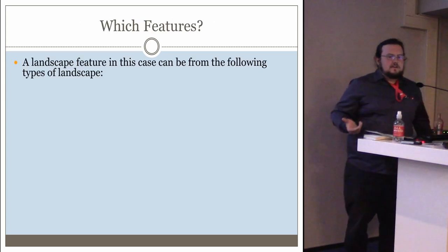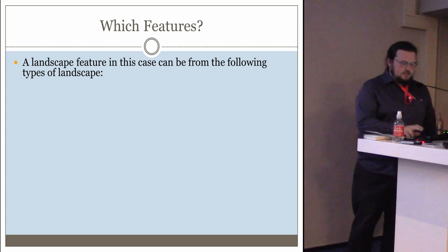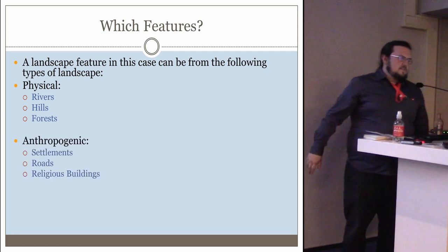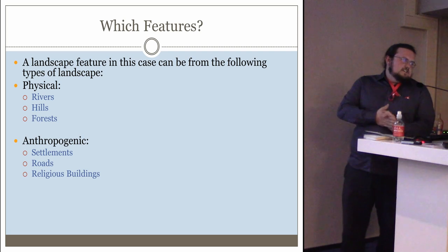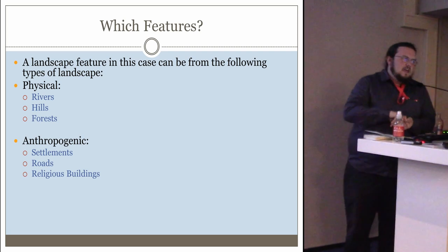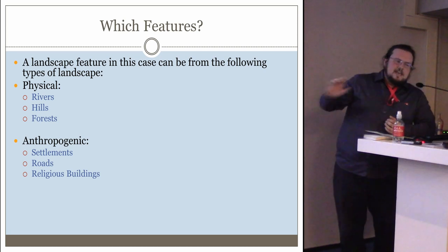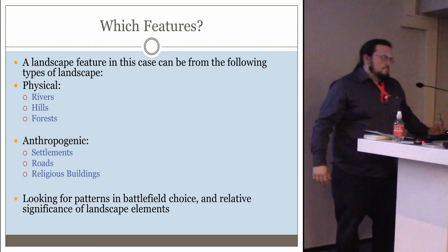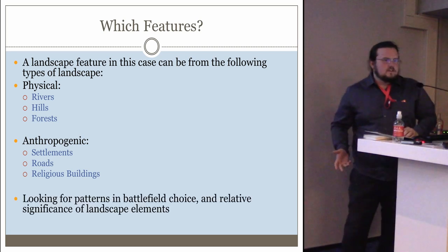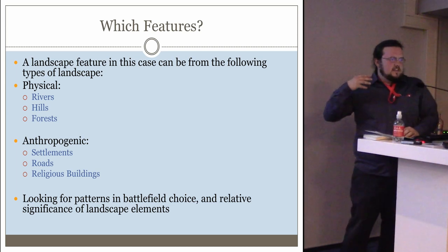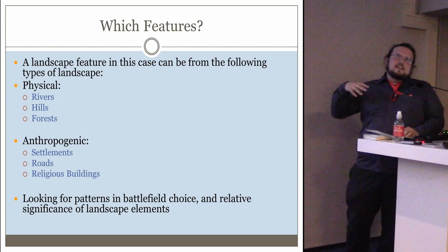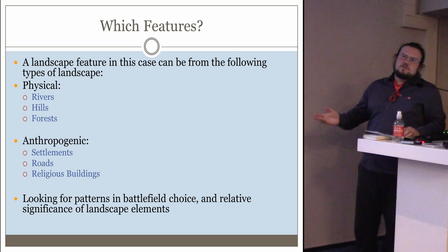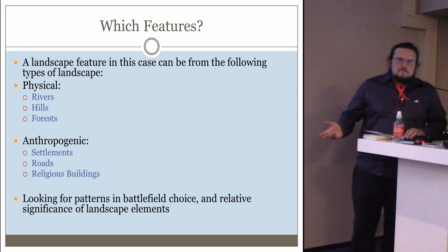In terms of setting landscape features, within my own study I've split them into two different types. First, physical or natural features in the form of rivers, hills, and forests. Then you have anthropogenic ones — features made by humans — settlements, roads, religious buildings, essentially the built landscape. Any one of these can affect where the battlefield happens within the landscape. However, my research has suggested these are not necessarily universally applied or utilized. Just because there happens to be a river, a hill, and a forest does not mean that you're going to use all of them equally, or any of them in fact.